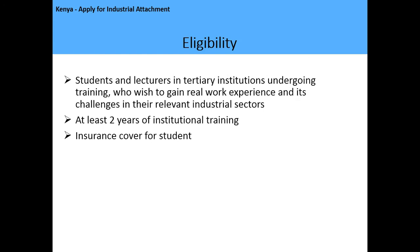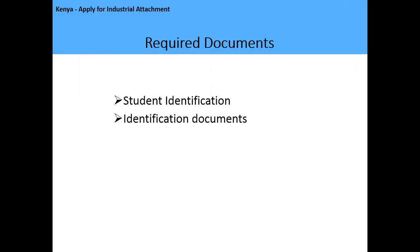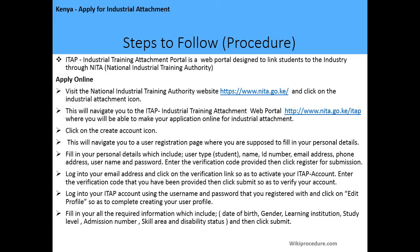The eligibility criteria is as follows: students and lecturers in tertiary institutions undergoing training who wish to gain real work experience in their relevant industrial sectors are eligible to apply. These students or lecturers should be at least in their second year of institutional training and should have an insurance cover. The required documents include a student identification card, your ID or passport, and proof of insurance cover.